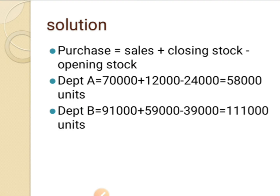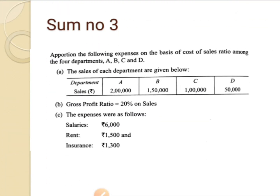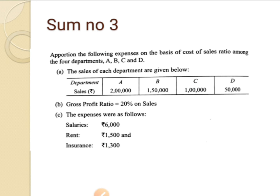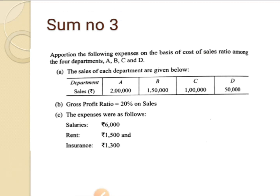That is the purchase. Next we'll move on to another problem. Let's see — apportion the following expenses. Please read the question carefully. Apportion the following expenses on the basis of cost of sales ratio among the four departments. We have to find out the cost of sales ratio, since expenses are to be apportioned in that ratio.